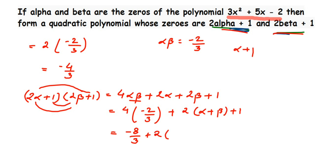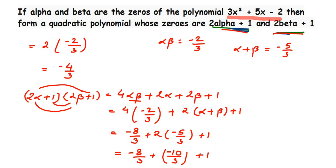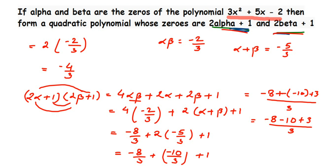In place of alpha plus beta, substituting minus 5 by 3: we get minus 8 by 3 plus 2 times (minus 5 by 3) plus 1, which is minus 8 by 3 plus minus 10 by 3 plus 1. Taking LCM of 3: (minus 8 minus 10 plus 3) by 3 equals minus 15 by 3. So the product of the zeros T equals minus 15 by 3.